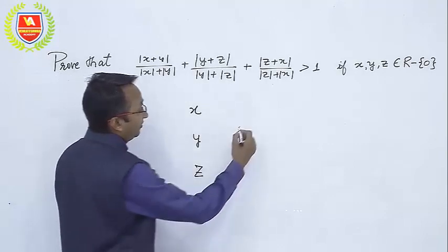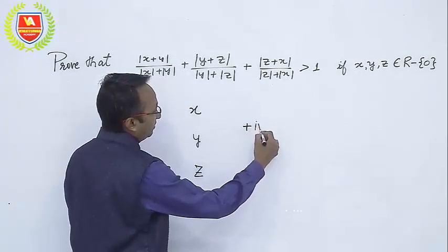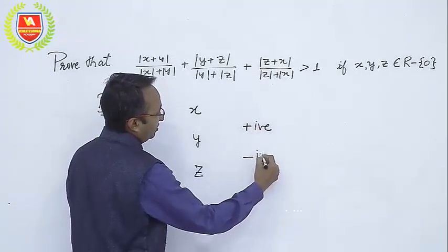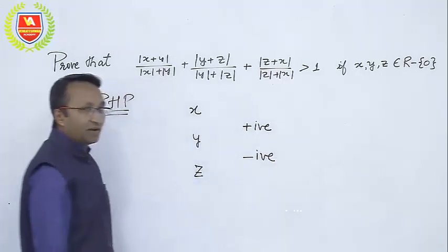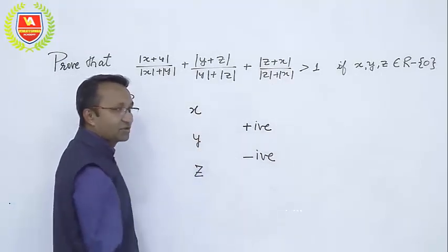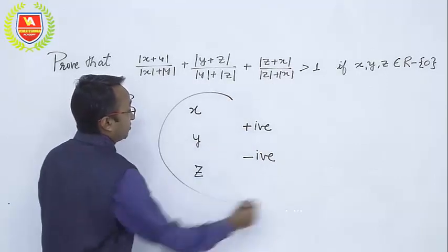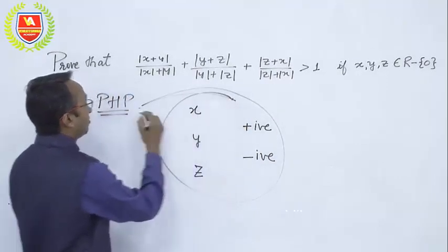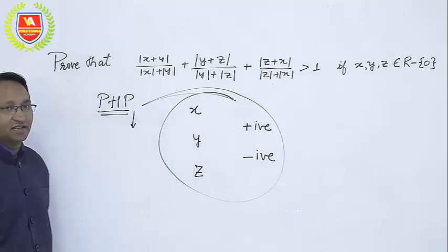At the same time, we have two signs - a number is either positive or negative. So if I look at it this way, the three numbers x, y, z and the two signs positive or negative, by the pigeonhole principle, it is bound to happen that two of them would have the same sign.